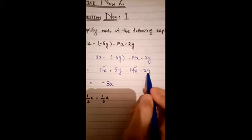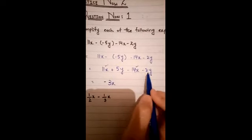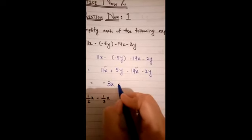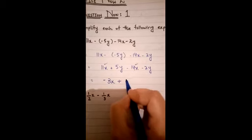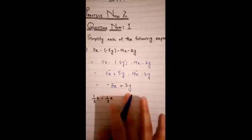Minus 2y, now minus 2y plus 5y. Because 5y is greater than minus 2y, so we put plus expression. Now that will be 3y. Minus 3x plus 3y.